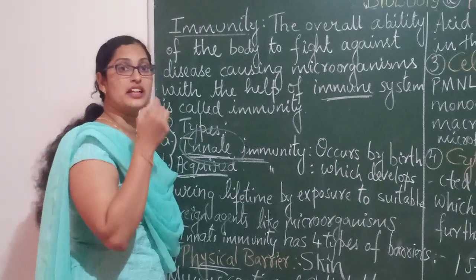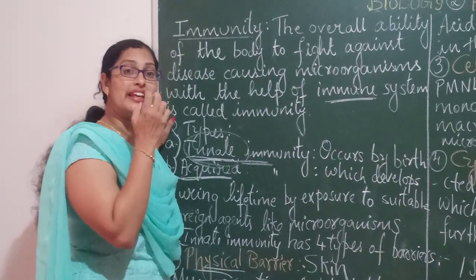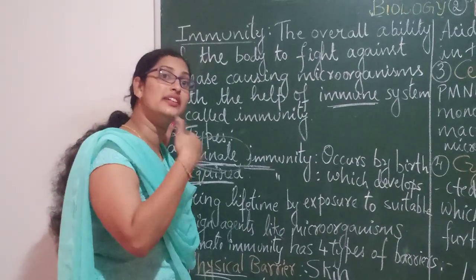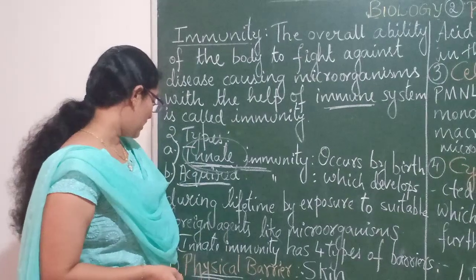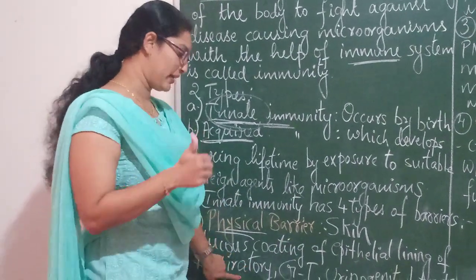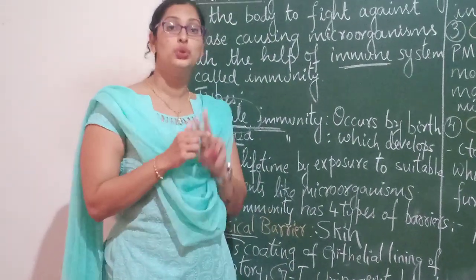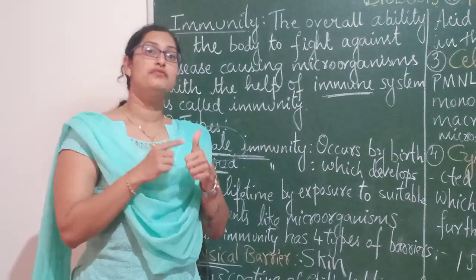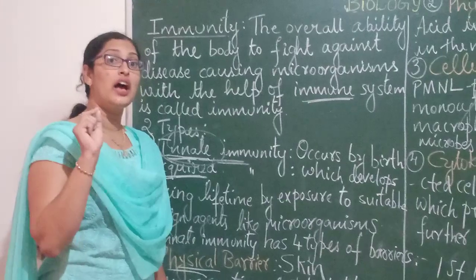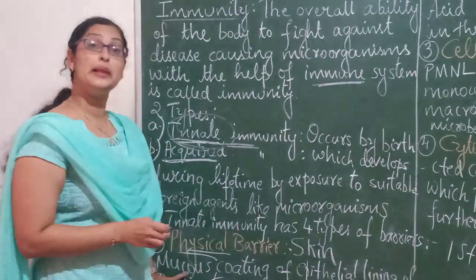For example, if something enters into your nose, you start sneezing. The irritation in the epithelial cells tries to expel all foreign things out. That is what the mucus coating of the epithelial lining of the respiratory tract, gastrointestinal tract, and urinogenital tract does. These are the two types of physical barriers: skin, and mucus coating in the epithelial lining of these three tracts.